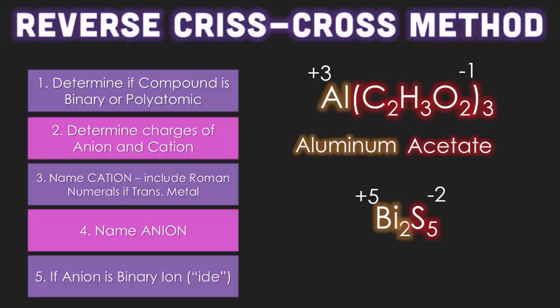Now, remember guys, the anion will never have a Roman numeral. So the next thing we have to do is say, what is the charge of our metal? I just figured out that bismuth is a positive five, so we have to name it bismuth with the Roman numeral five. Then, since our anion is binary, we have to drop the ending and make sure it's ide. So this would be called bismuth five sulfide. And you can't forget the Roman numeral here because there is another bismuth, which means there can be another bismuth sulfide.